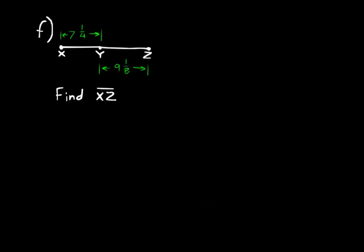Let's do one more problem dealing with line segments. In this one, you've been given a length from X to Y and a length from X to Z. I want you to find the segment XZ, the entire thing from X to Z. All we have to do is add those two given lengths together. So we'll say 7 and 1/4 plus 9 and 1/8. We have mixed numbers. Let's add the fraction parts first. We need common denominators, so 1/4 needs to be 2/8 plus 1/8 would be 3/8. Then add the whole number part. 7 and 9 is 16.